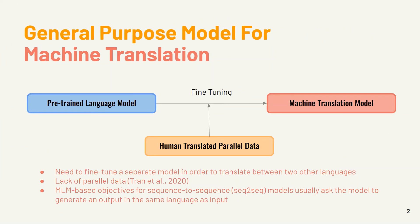Usually for generating a machine translation model, the fine-tuning pre-training approach is used. In that approach, a pre-trained language model like BERT is fine-tuned with human-translated parallel data to reach the machine translation models. However, some issues may arise. One of them is the need to fine-tune a separate model to translate between two other languages. Another issue, shown by Tran et al. 2020, is the lack of parallel data, which shows itself in low-resource languages.